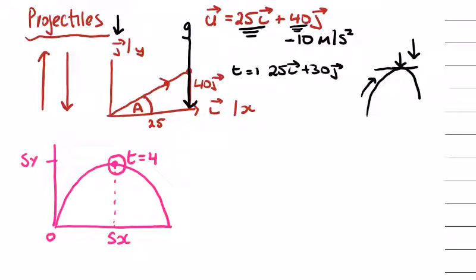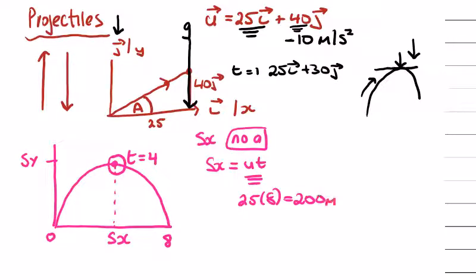So if we want to get s of x first, we can put our zero and our eight on because of the symmetry of the curve. S of x has no a, so s of x from now on will always be just equal to ut. Really simple thing to get to know. So 25 times 8 is 200 meters for the range for x.